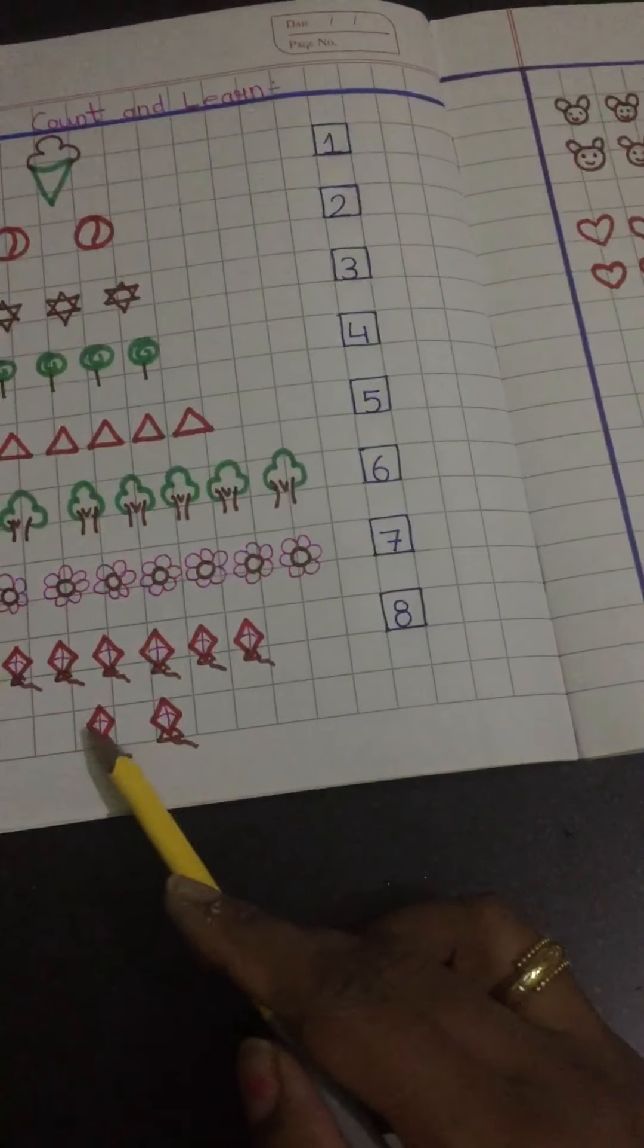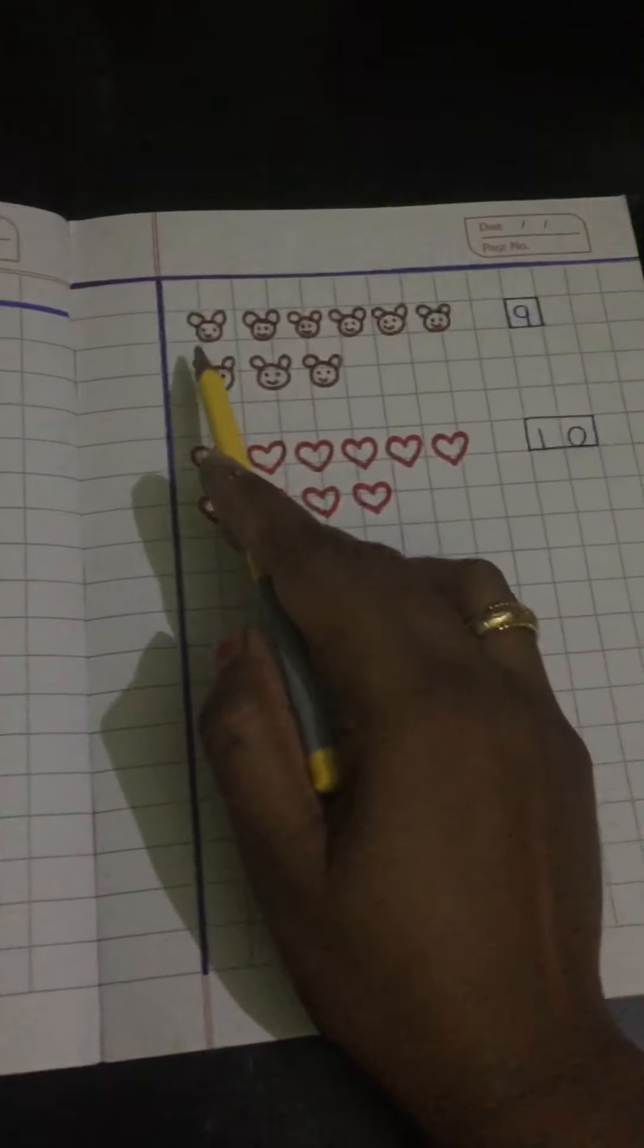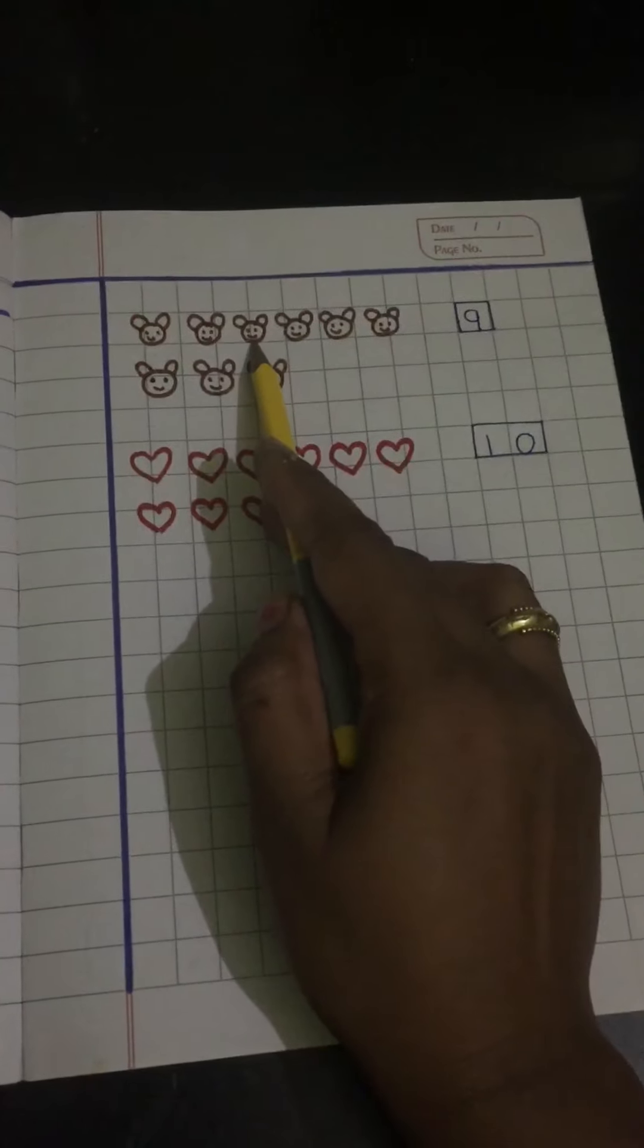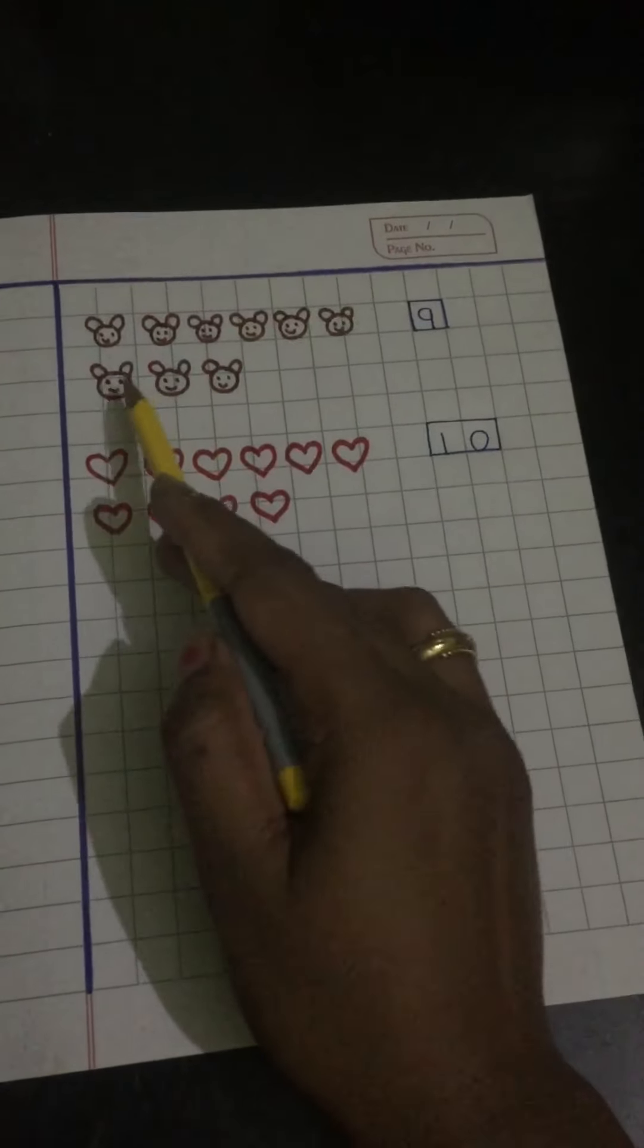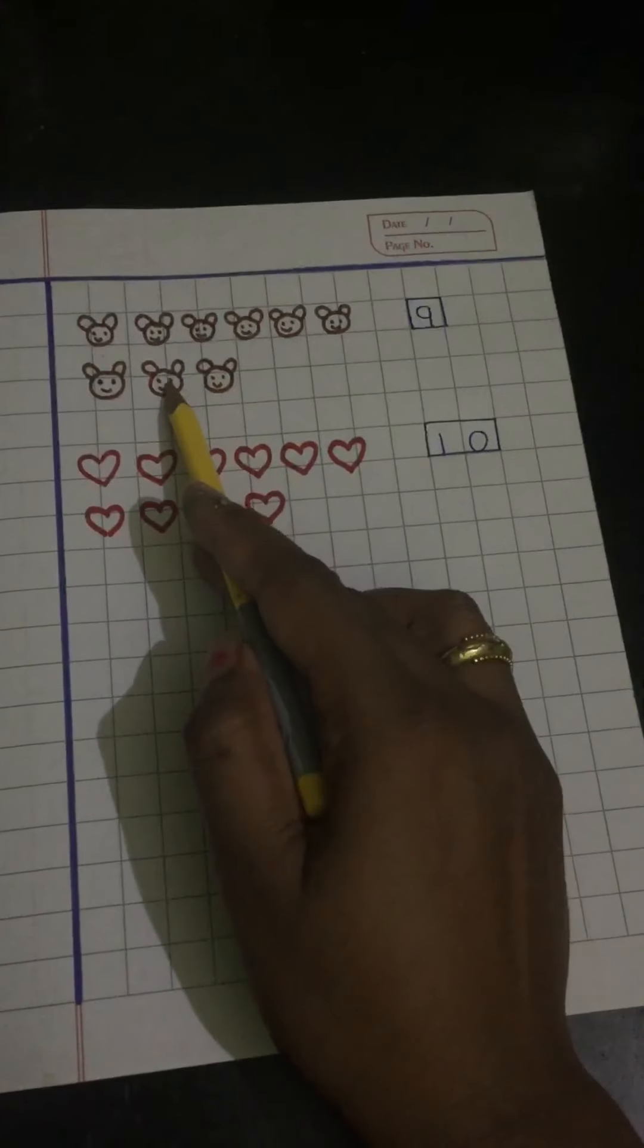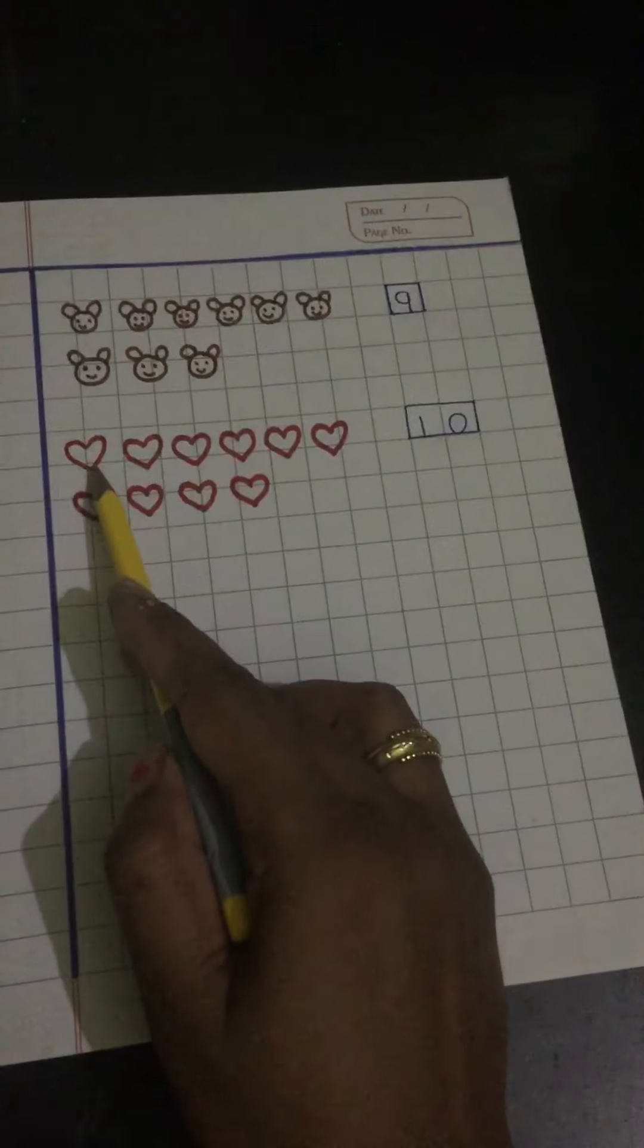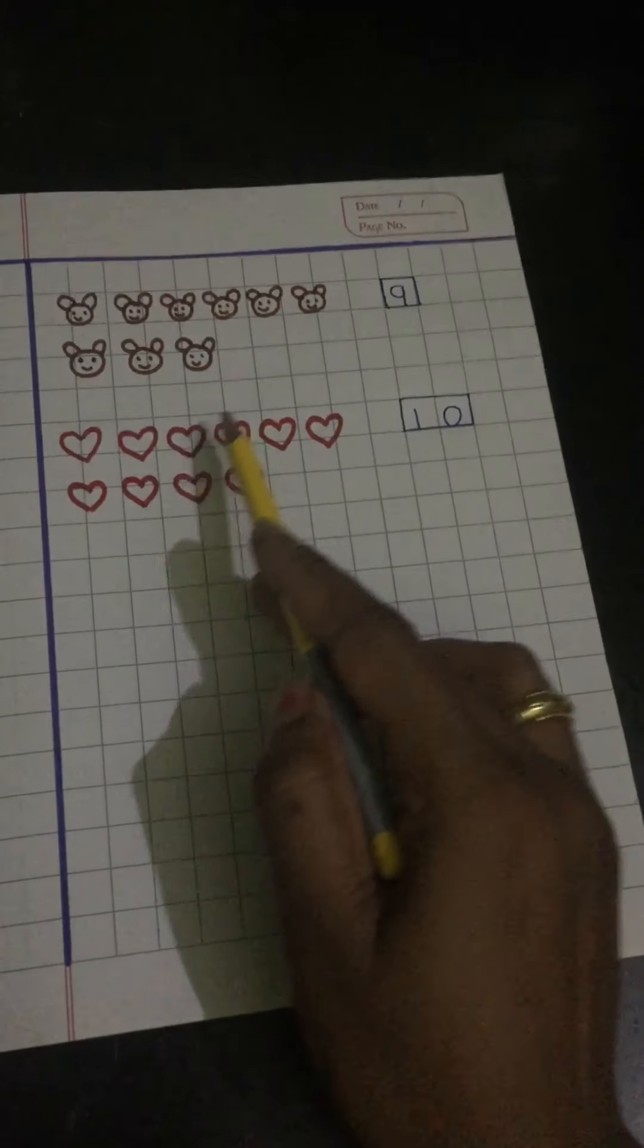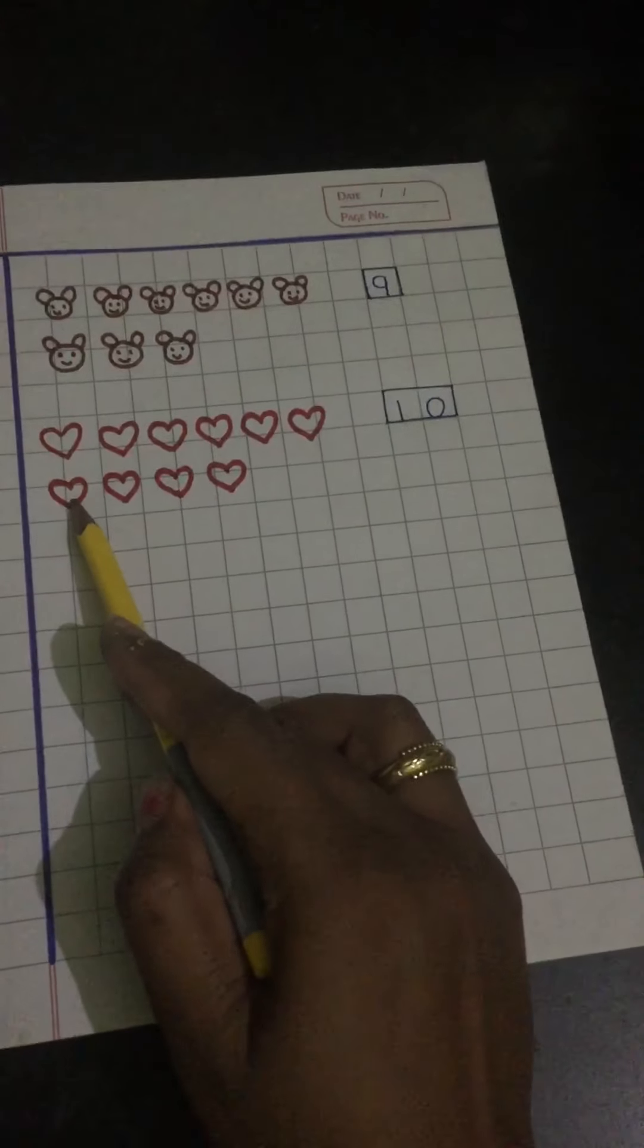Seven, eight. Eight. One, two, three, four, five, six, seven, eight, nine. Nine. One, two, three, four, five, six, seven.